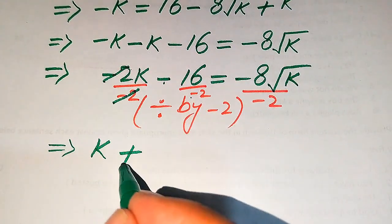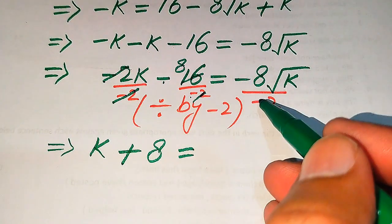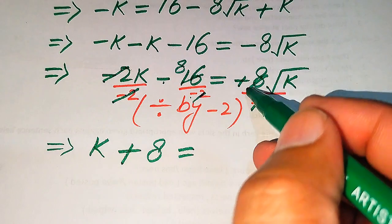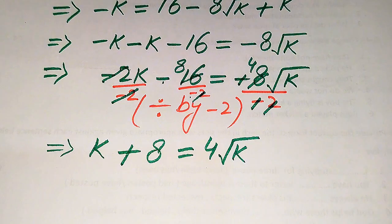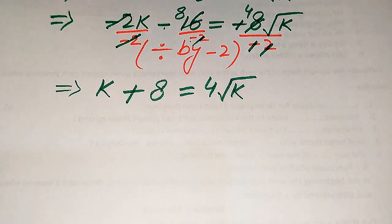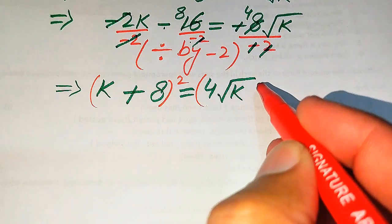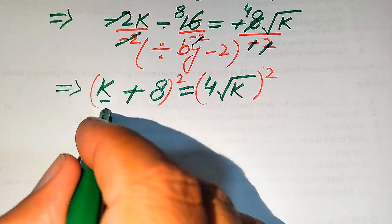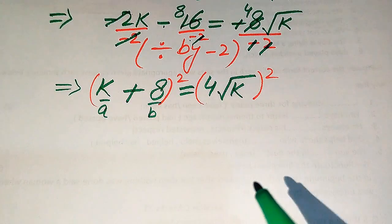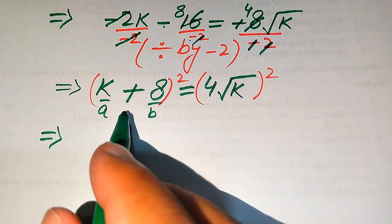On the right hand side we still have a square root sign on k, so we square both sides again. We again apply the algebraic formula, where the left hand side has our a and b terms.